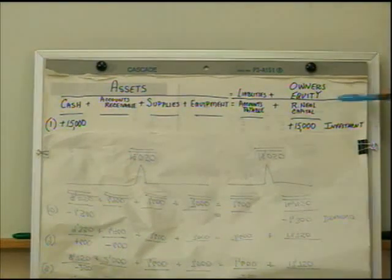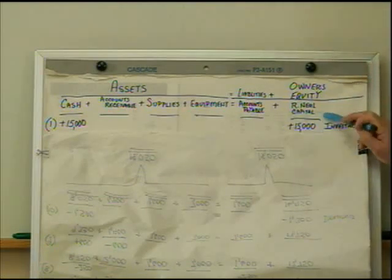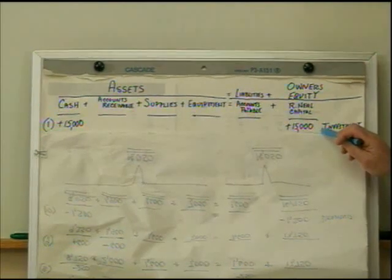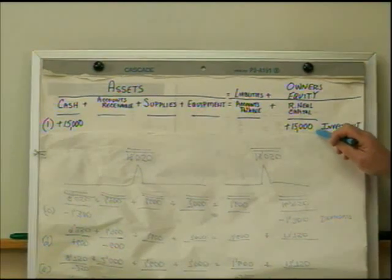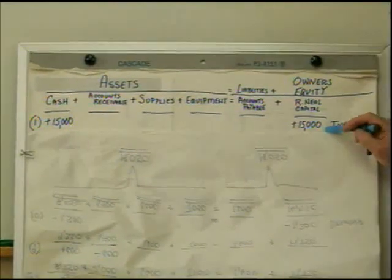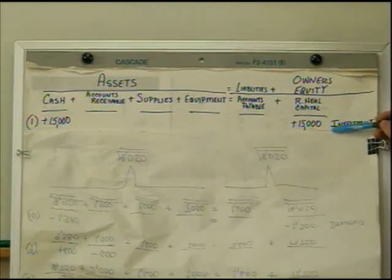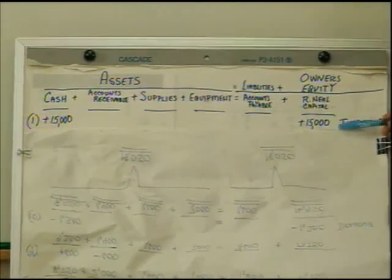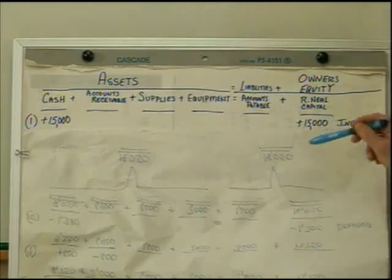Whenever we put anything into owner's equity, we have to classify what it was. It will be one of four things: the owner's investment, a withdrawal, revenue that increases it, or expenses that decrease it. So whenever we put anything into this column, we have to classify what that item is.